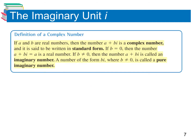Here we have the definition of a complex number. If a and b are real numbers, then a plus bi is a complex number written in standard form. If b equals 0, the number is just a — a real number. If b does not equal 0, then a plus bi is called an imaginary number. A number of the form bi, where b does not equal 0, is called a pure imaginary number — it doesn't have the real part.